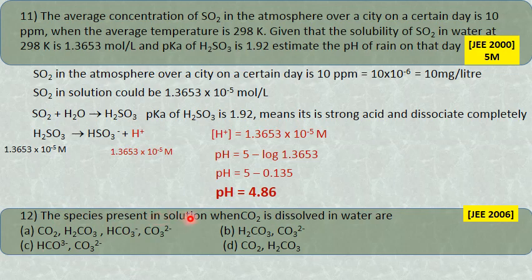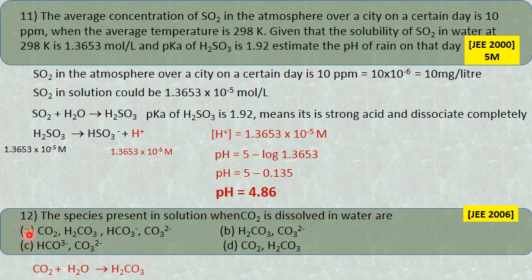The species present when CO₂ is dissolved in water: CO₂ dissolves to give carbonic acid H₂CO₃. H₂CO₃ ionizes to give bicarbonate ion HCO₃⁻ and carbonate ion CO₃²⁻. So present in solution are CO₂, H₂CO₃, HCO₃⁻, and CO₃²⁻. All are possible. Answer is A.